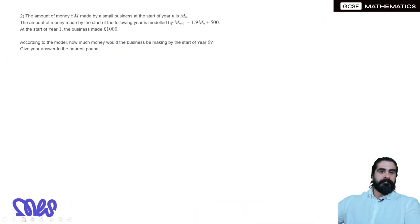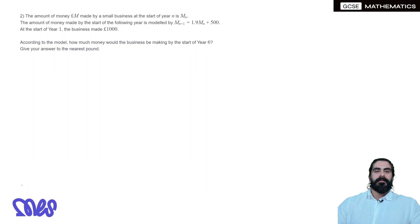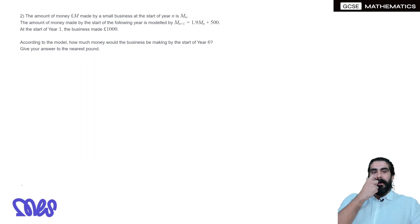Question two. The amount of money M pounds made by a small business at the start of year n is mₙ. The amount of money made by the start of the following year is modelled by mₙ₊₁ equals 1.9mₙ plus 500. At the start of year 1 the business made £1000. According to the model, how much money would the business be making by the start of year 6?